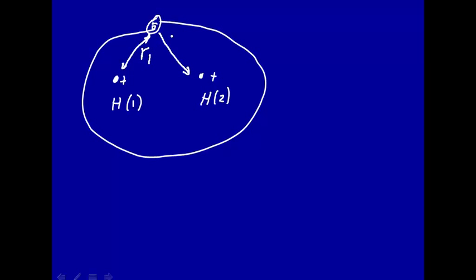This would be r2, that's the distance of the electron from the second nucleus, and then there's another parameter, another distance here, r, which is the distance between the two nuclei.